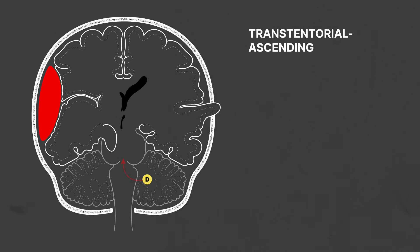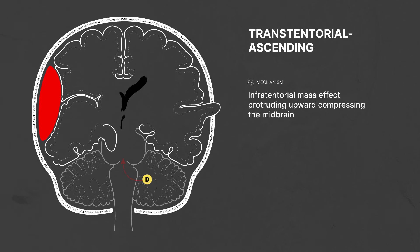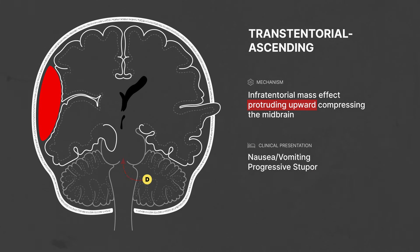Transtentorial ascending herniations occur when the infratentorial mass effect protrudes upwards to compress the midbrain, which can present clinically with nausea, vomiting, and progressive stupor.